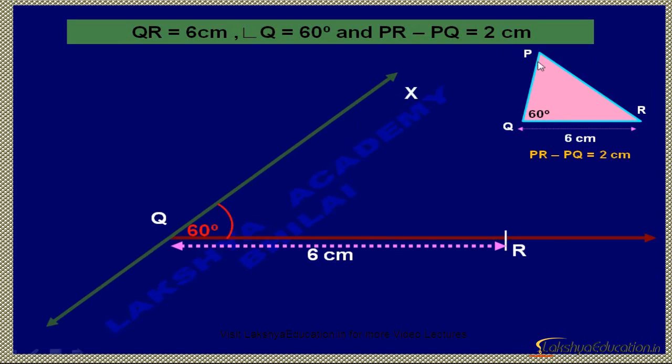Again, look here. PQ is shorter than PR by 2 cm, so measure from Q 2 cm at the bottom side. Name this point A.